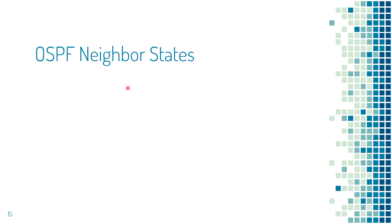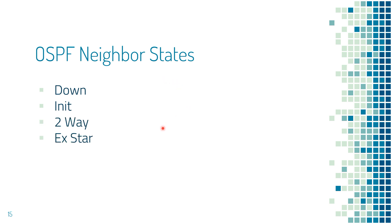The OSPF speaking router has to transition through multiple phases before it becomes fully adjacent with its neighbors. The states of transitions in OSPF are: Down state, Init state, Two-Way state, ExStart state, Exchange state, Loading state, and finally Full state.